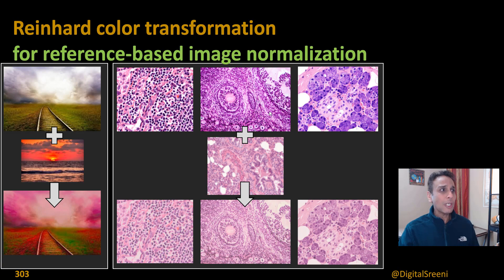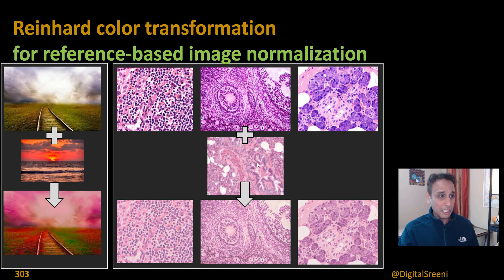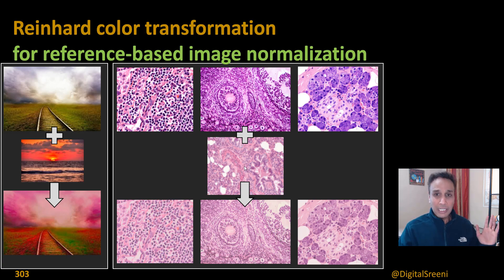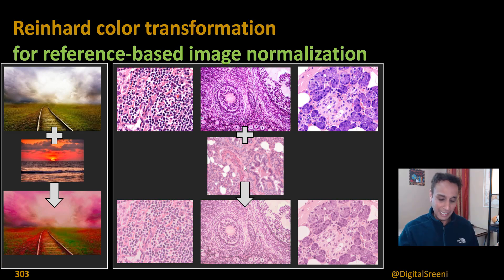For example, pathology input images can look very different — one is more purplish, one is in the middle range of purple, and another has a different look and feel. If you want to bring all of these into a reference image space, this is exactly the approach for you. You apply the transformation and all output images end up with the look and feel of the template image. You have a template that defines how your images should look — and that's exactly what we're going to do.